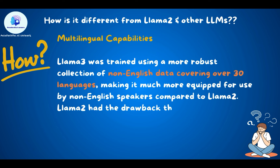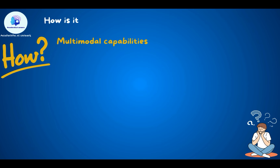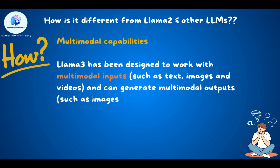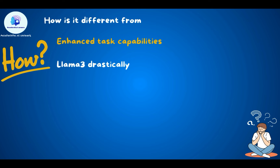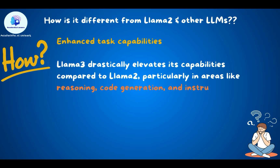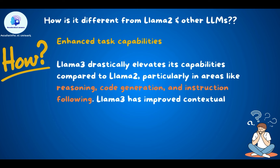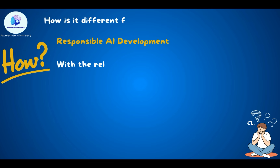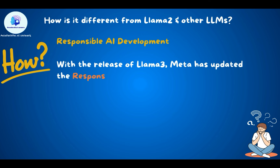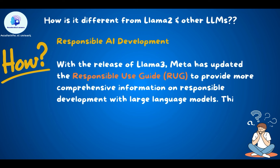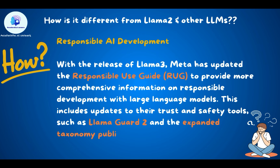LAMA 2 had the drawback that 95% of its training data was English. LAMA 3 has been designed to work with multimodal inputs such as text, images, and videos, and can generate multimodal outputs. It drastically elevates capabilities compared to LAMA 2, particularly in reasoning, code generation, and instruction following. It also has improved contextual understanding for complex multi-step tasks. Meta has updated the Responsible Use Guide to provide more comprehensive information, including updates to trust and safety rules such as LAMA Guard 2 and the expanded taxonomy published by ML Commons.